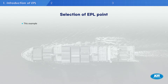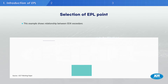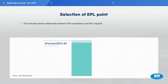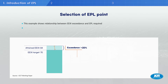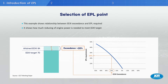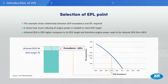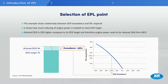In this example, the vessel's attained EEXI is 84 but the EEXI target is 70. Since the attained EEXI exceeds the target by 20%, the engine power must be reduced by 24%. Of course, this 24% is just an example for easy understanding, and the specific relationship between EEXI and EPL will vary depending on the ship. Importantly, if the attained EEXI is higher than the EEXI target, the simplest method is to limit the engine power.